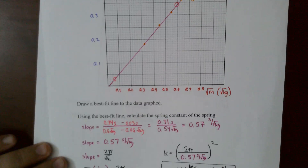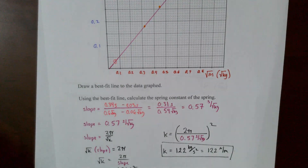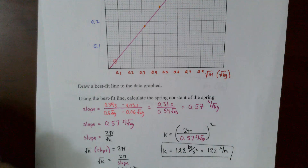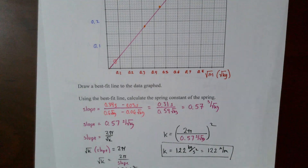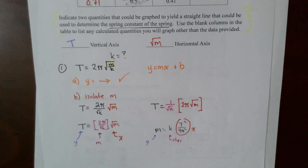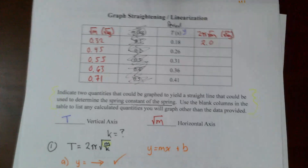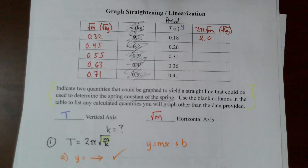Everyone who does this correctly should get a spring constant of about 122 N/m. Thanks for watching — we're going to practice this in class, so if you're confused don't worry. You've at least seen the basic outline, and we'll work on this a lot together.